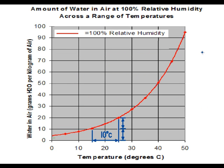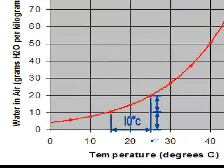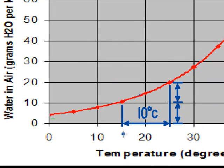This graph shows the amount of water which can be held in a parcel of air at different temperatures. We can see that as we increase the temperature, the amount of water which can be held by the atmosphere increases. In fact, if we were to increase the temperature from 15 degrees to 25 degrees — so increase the temperature by 10 degrees centigrade — we almost get a doubling in the amount of water that this parcel of air can hold.